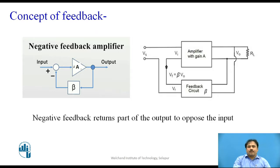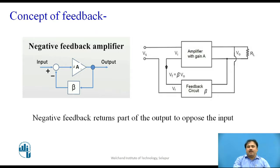Feedback is one of the main concepts in amplifiers. In feedback, we provide or add a part of the output signal back to the input. Now, why is feedback required? In an amplifier, gain is one of the main components. When we design an amplifier, we expect the gain to remain constant. However, the gain is not constant because of certain parameters — for example, a change in temperature causes the Q-point to change, so the output tends to change. This means the circuit is not stable; stability may change due to environmental conditions and circuit parameters.